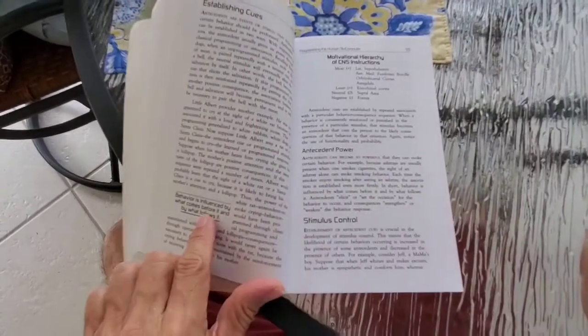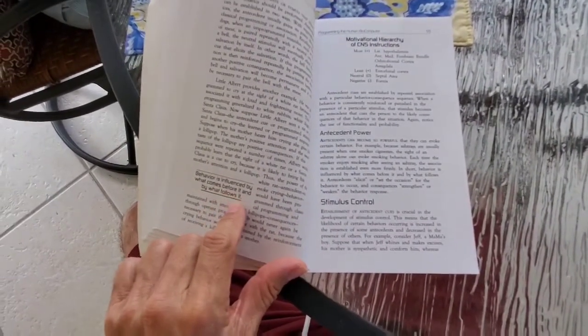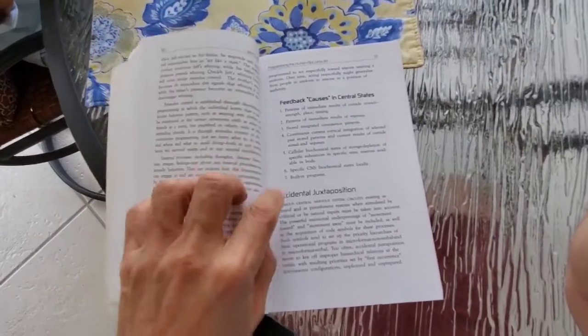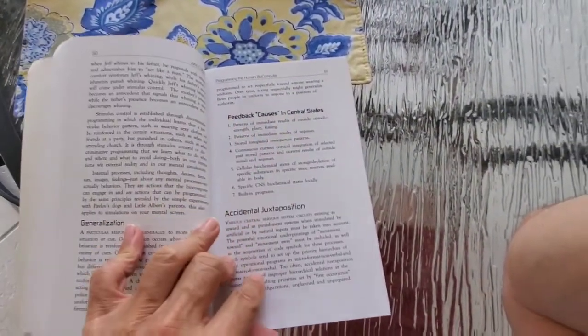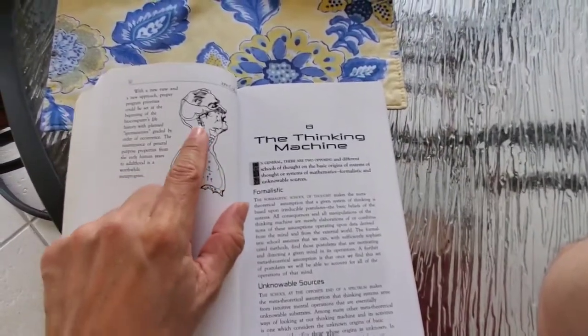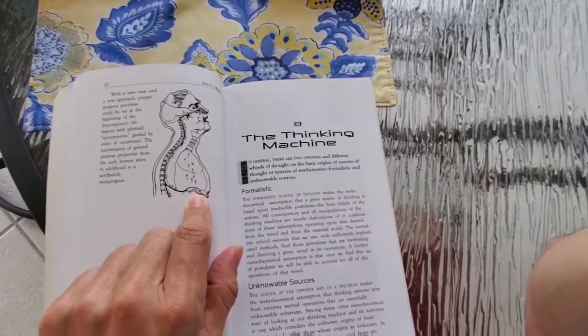Behavior is influenced by what comes before it and by what follows it. Feedback causes in central states.